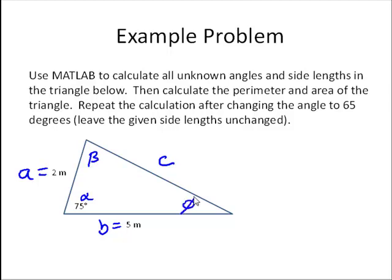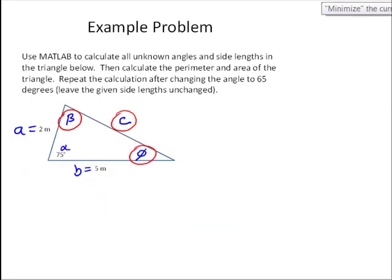Now, looking at that, so what we need to find are we need to find beta, phi, and C. So, digging back in our memories, let's remember how we can do that.